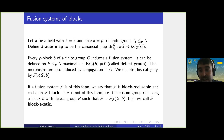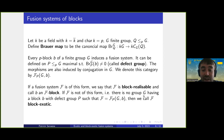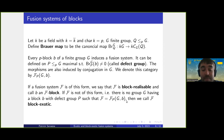Not every fusion system is of this form. If a fusion system F is of this form, we call it block realizable. If we cannot find a group G with a block b and defect group P such that F equals F_P(G,b), we call F block exotic.